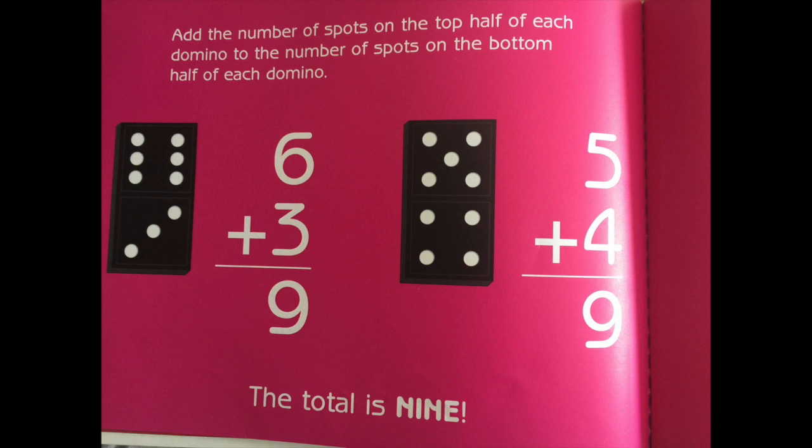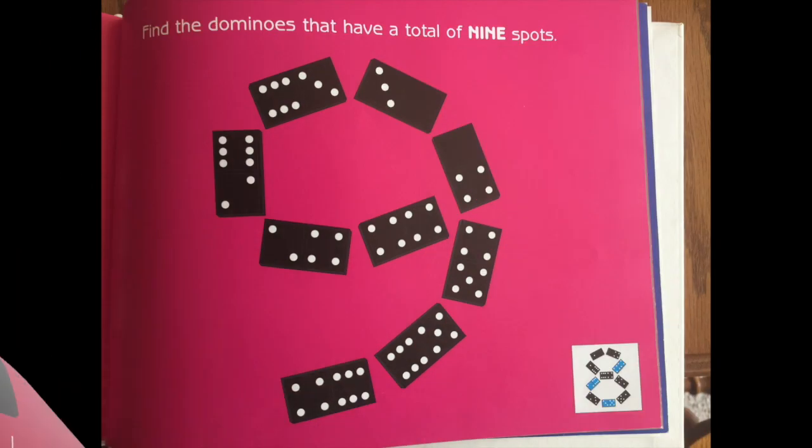Add the number of spots on the top half of each domino to the number of spots on the bottom half of each domino. Six plus three, nine. Four plus five, nine. The total is nine. Find the dominoes that have a total of nine spots.